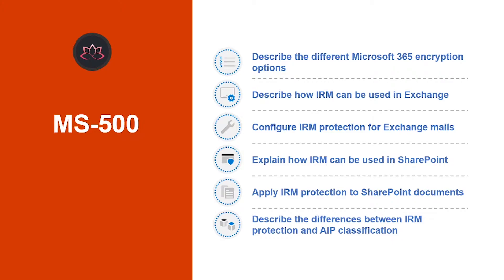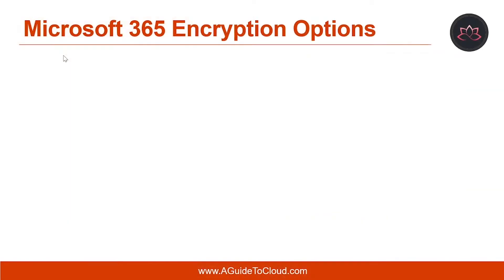So without wasting any more time, let's get into it. Let's start with understanding Microsoft 365 encryption options. Encryption by itself doesn't prevent content interception. Encryption is part of a larger information protection strategy for your organization.